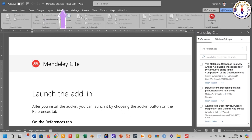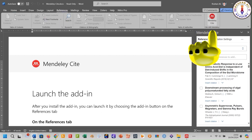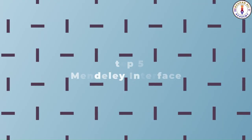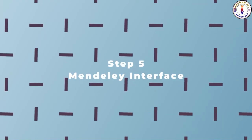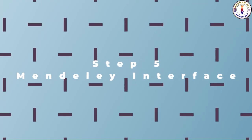Your Mendeley plugin is now installed. You can access the Mendeley plugin by clicking on References in Word. Here is the Mendeley Cite tool. Step number five: understanding the Mendeley interface.